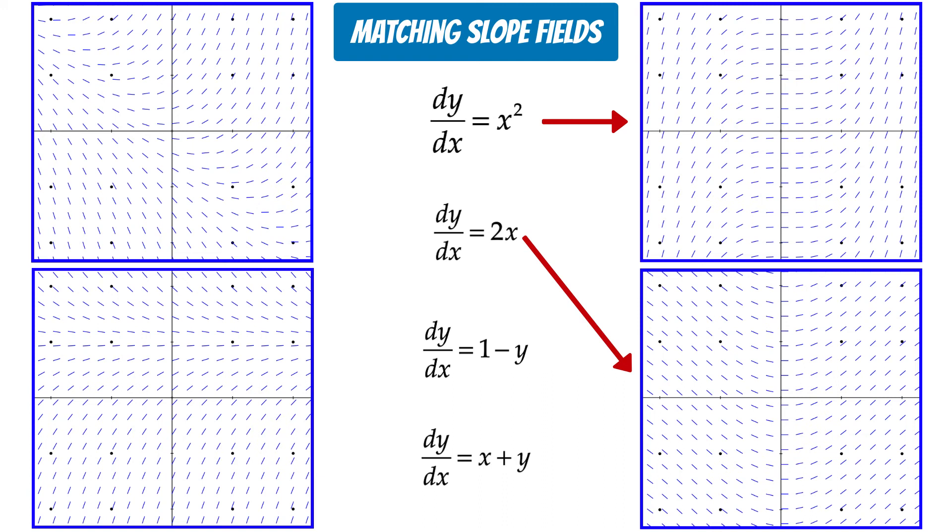The next differential equation is dy/dx equals 1 minus y. Notice that if we plug in 1 for y, we'll get a slope of 0. This matches the slope field in the lower left corner. As you can see at y equals 1, the slope is 0.